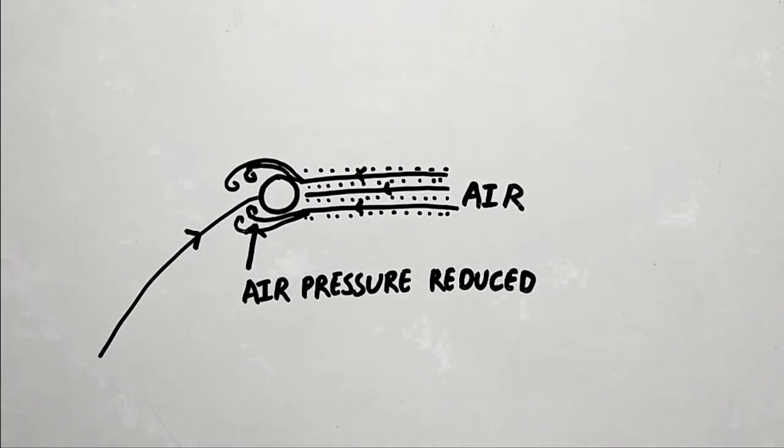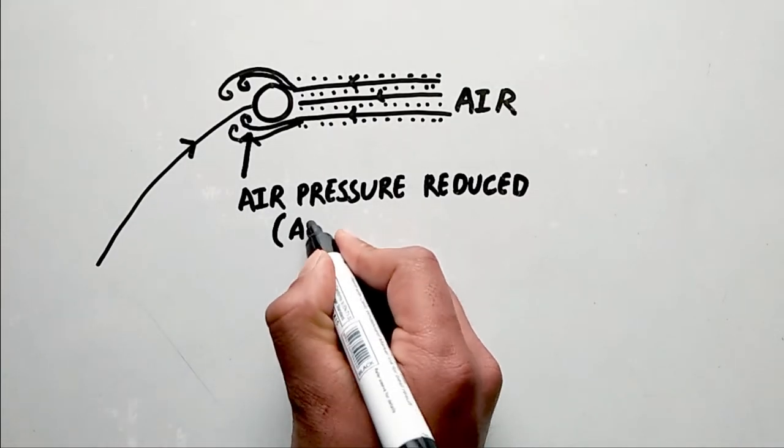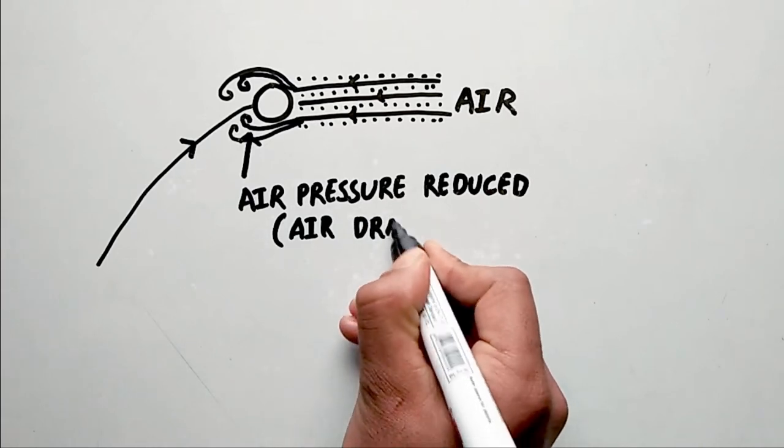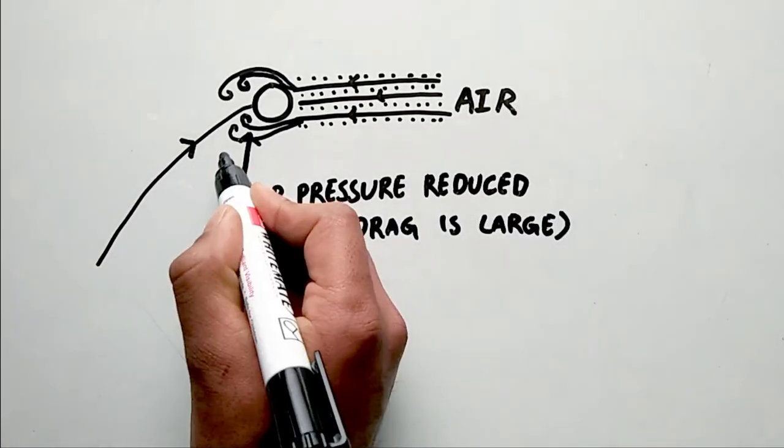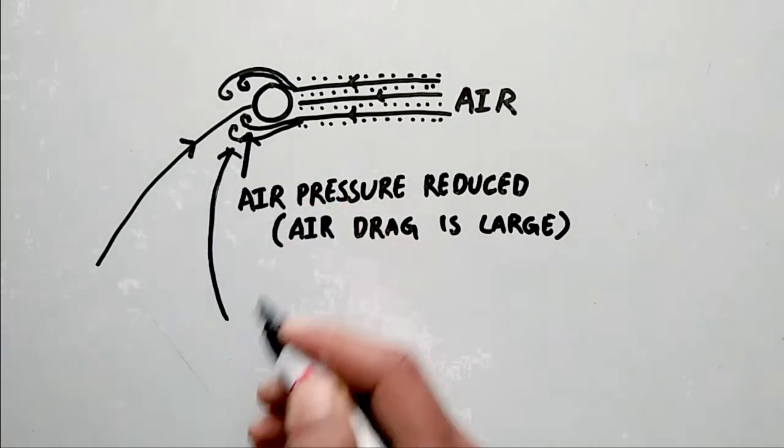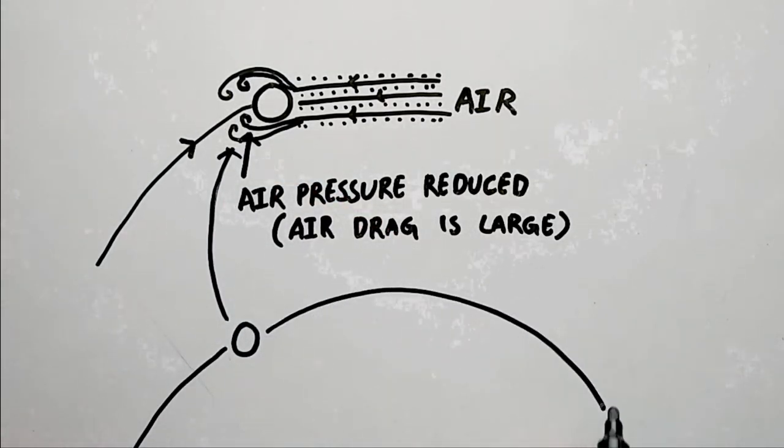If the region of vortex formation at the rear of the ball is extensive, the pressure difference between the front and the rear of the ball can be large. That means the air drag is large and the ball doesn't fly very far.